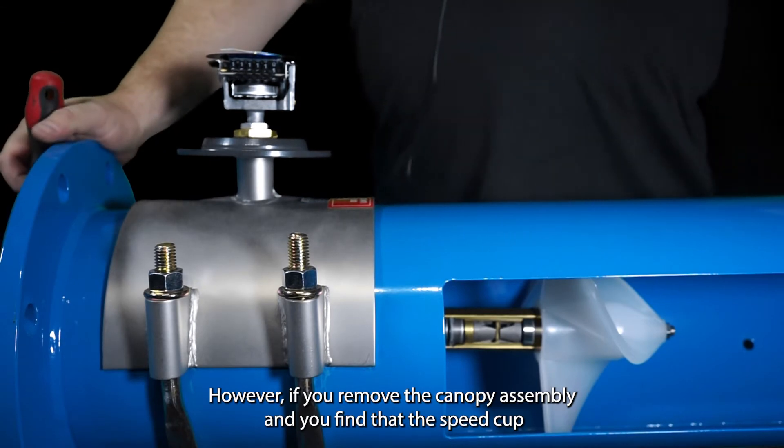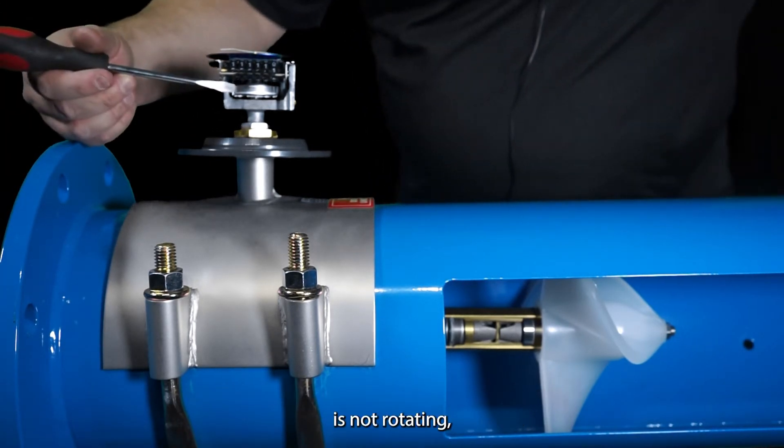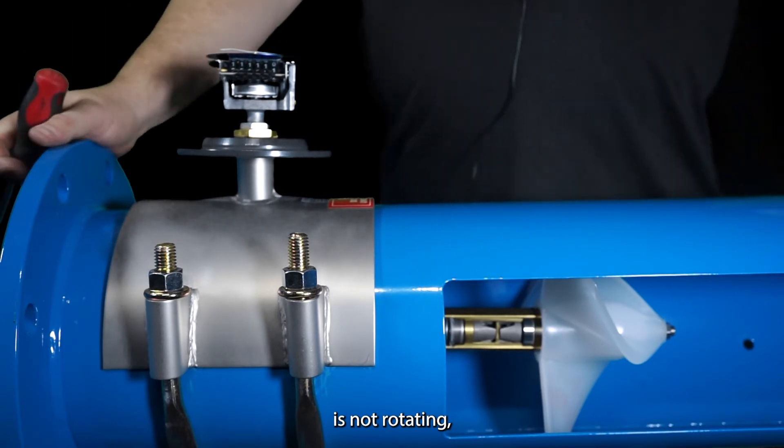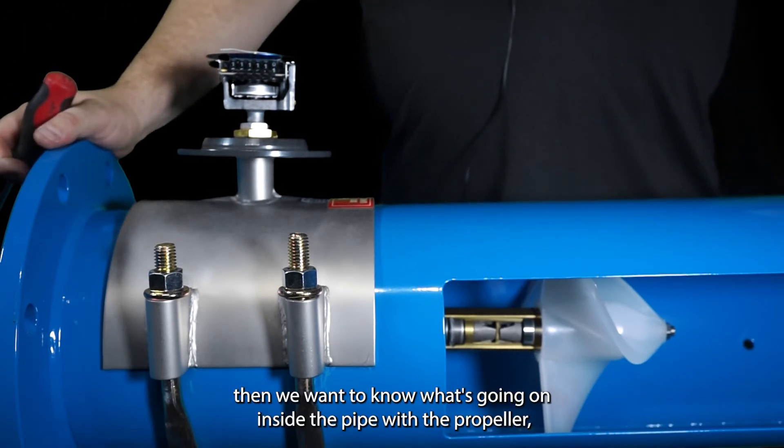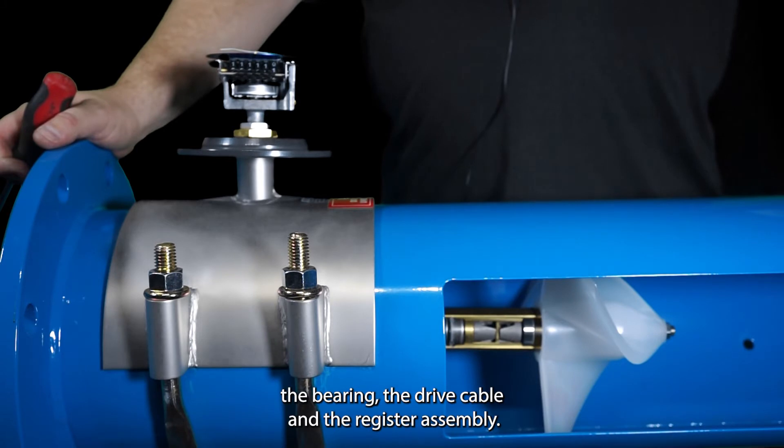However if you remove the canopy assembly and you find that the speed cup is not rotating then we want to know what's going on inside the pipe with the propeller, the bearing, the drive cable, and the register assembly.